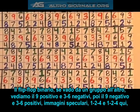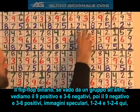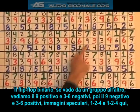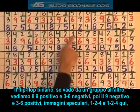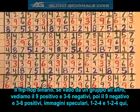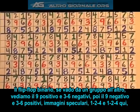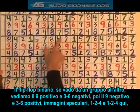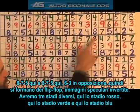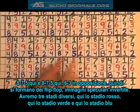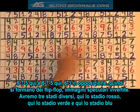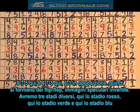Binary flip-flop. As I go from one group here to the next, I've got a positive 9 and my 3 and 6 are negative, and I've got a negative 9 and my 6 and 3 are positive. They're mirror image inversions — here I've got 1, 2, 4 and now my 1, 2, 4 is over here; 8, 7, 5 here and 8, 7, 5 here. The 6s and 3s are opposed, so they're forming flip-flopping mirror images.